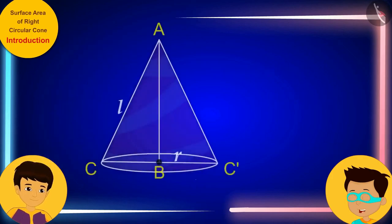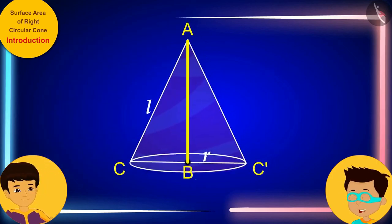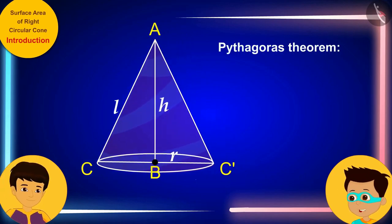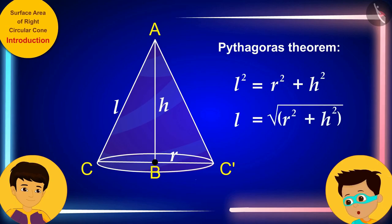And look, if we consider the height of the cone as H, then, from the Pythagoras theorem, we can see that we can write the slant height of the cone in this way.